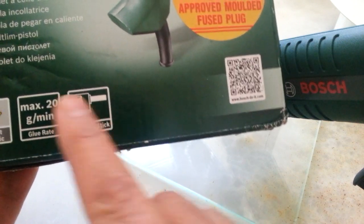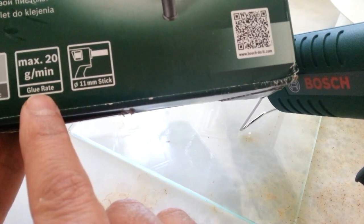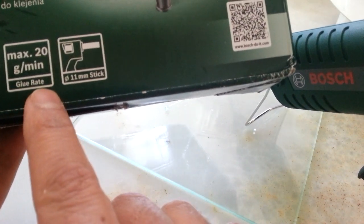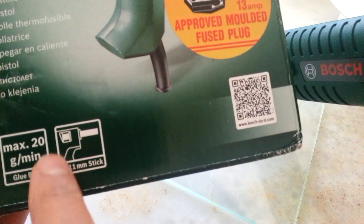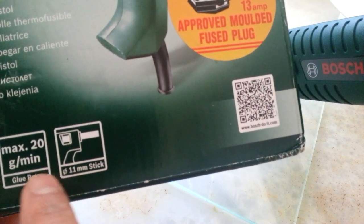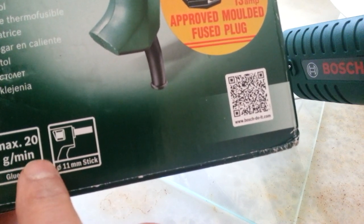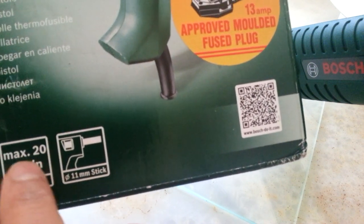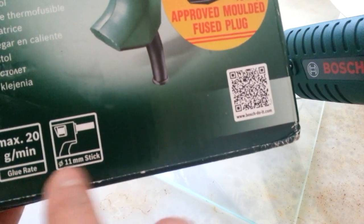The glue stick is 11 millimeter and the maximum glue rate that it can come out is about 20 grams per minute.